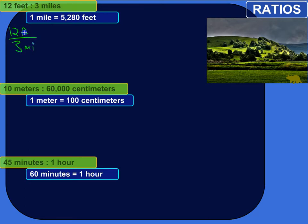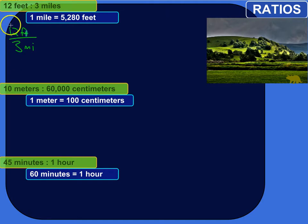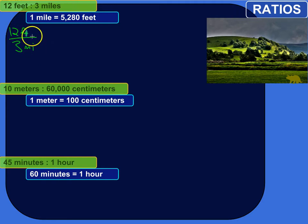Now, we want to simplify that. There are a couple things that have to happen. The number part needs to be as simple as possible — canceling out shared factors. And then the units need to be the same so that they cancel out. Feet and miles are not the same thing, so we need to get the units to be the same.